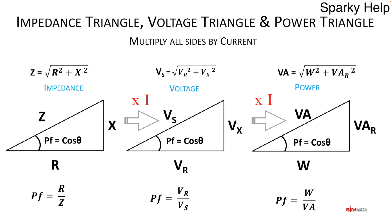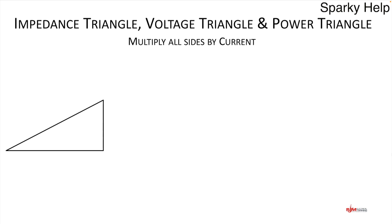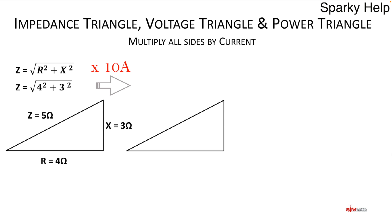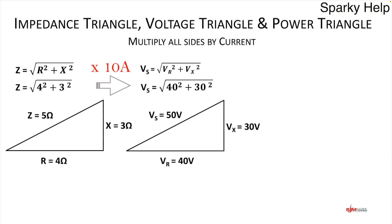Let's put some numbers in. R is 4, X is 3. Applying Pythagoras — R squared plus X squared — it's a 3-4-5 triangle, so Z is 5 ohms. If we multiply each side by a current of 10, we get the voltage triangle: 10 times 4 is 40, 10 times 3 is 30, and applying Pythagoras to VR squared plus VX squared gives 50 volts — proving Kirchhoff's voltage law.